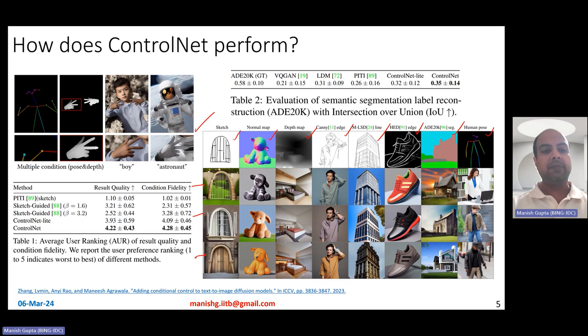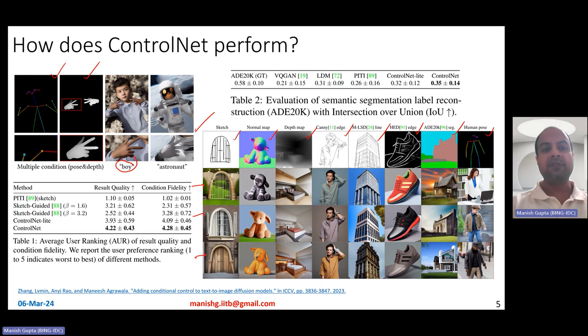They also evaluate by giving multiple conditions at a time. What if you give two images — one is a depth map, the other is a pose map — and you want to generate images which follow both? It turns out it can take these, and also a text caption, and generate an image which follows both conditioning inputs. They experimented with multiple conditions and found that the model does respect multiple conditions, both text and image-side.